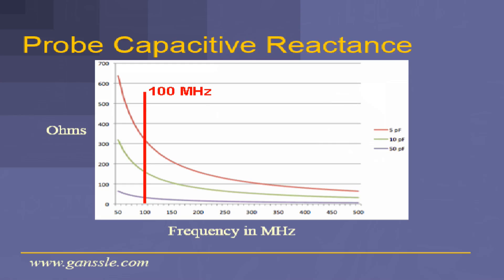Look at this graph. This shows the impedance of a scope probe as a function of frequency. On the vertical axis we see Ohms — impedance — and frequency across the horizontal axis. There are three curves shown: a curve for a scope probe with 5 picofarads of capacitance, one with 10 picofarads, and one with 50 picofarads, because capacitance is the dominating effect in scope probes. As you can see, at DC, yeah, 10 megaohms is great, but none of us measure DC. As you go to higher frequencies, that impedance goes down. At 100 megahertz with a 50 picofarad probe, you're talking about a handful of Ohms. Putting that probe on any node is going to cause the system to crash.